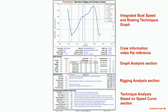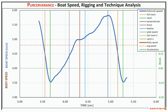At the top of the page is the integrated boat speed and rowing technique graph. Below that, crew video file and speed curve reference information, the graph analysis data section, rigging analysis section, and finally at the bottom, the technique analysis based on speed curve section.